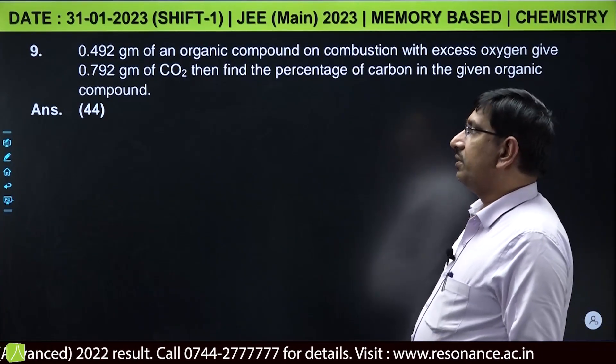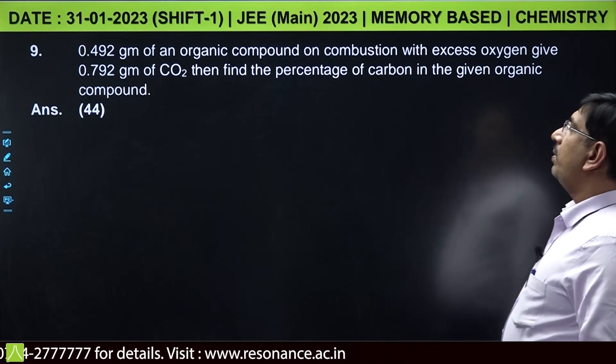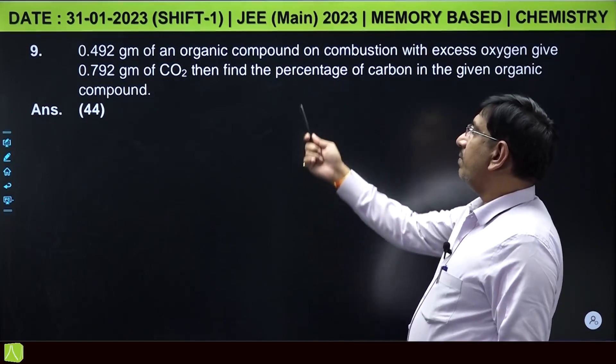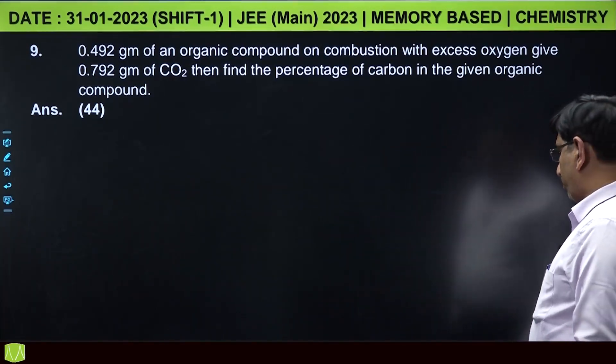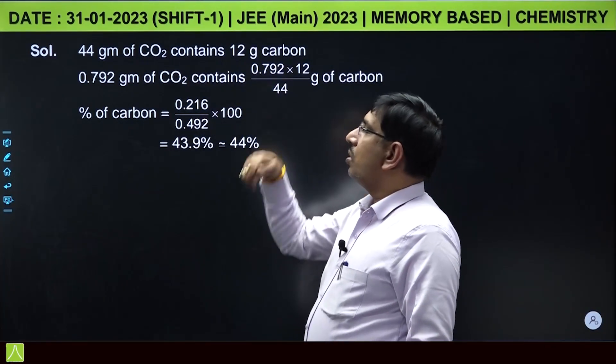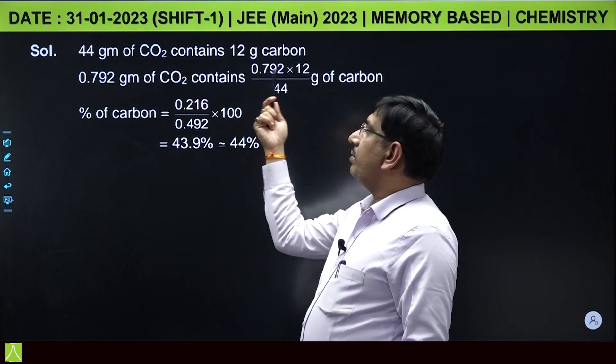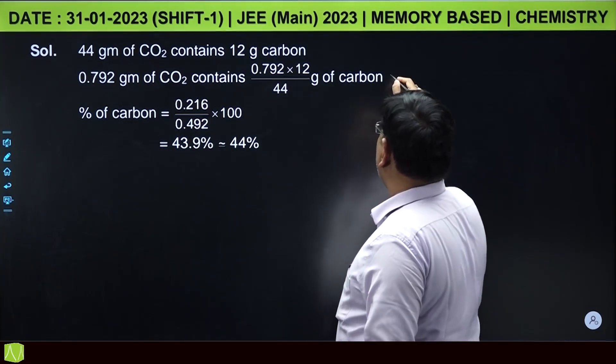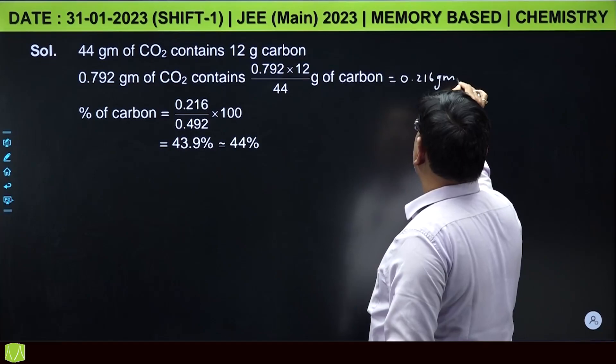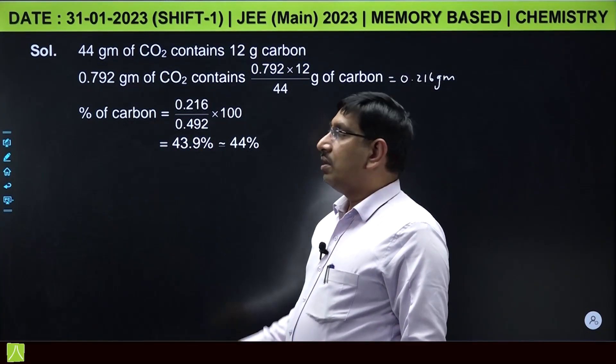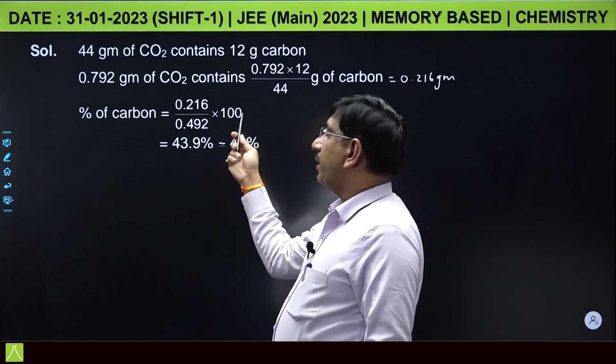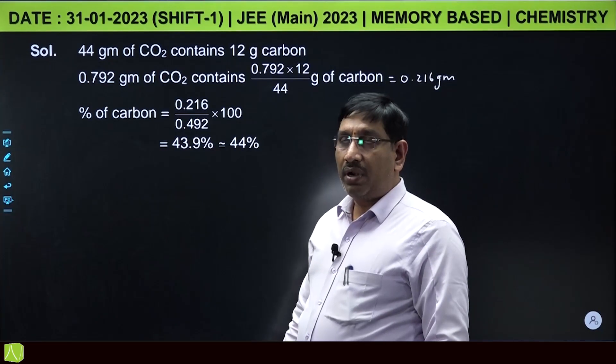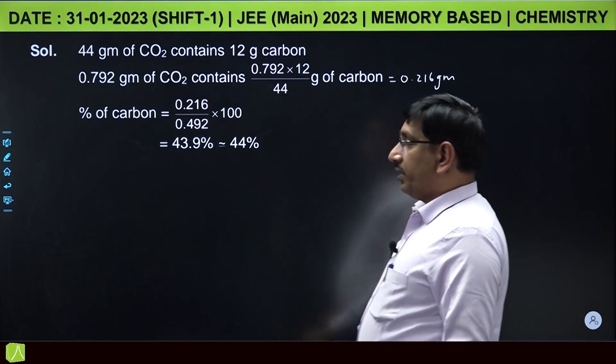This is simple mole concept question. 0.492 grams of an organic compound on combustion with excess of oxygen gives 0.792 grams of CO2. Find the percentage of carbon in the given organic compound. 44 grams of carbon dioxide contains 12 grams of carbon, 0.792 grams of carbon dioxide contains 0.792 into 12 by 44 equal to 0.216 grams of carbon. The percentage of carbon is weight of carbon by weight of organic compound into 100: 0.216 by 0.492 into 100, it is 43.9 percent, and if you round off it is 44 percent.